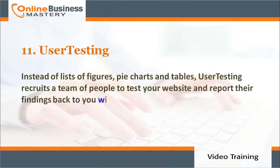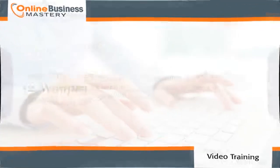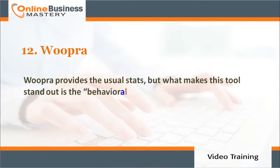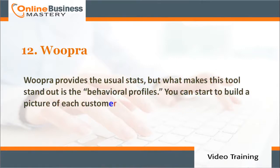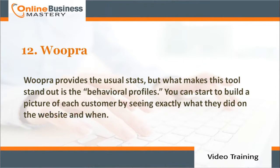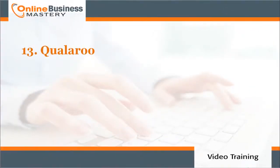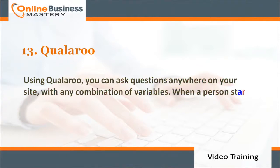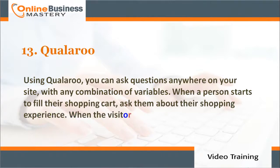Number eleven: UserTesting. Instead of lists of figures, pie charts, and tables, UserTesting recruits a team of people to test your website and report their findings back to you within an hour. Number twelve: Woopra. Woopra provides the usual stats, but what makes this tool stand out is the behavioral profiles — you can start to build a picture of each customer by seeing exactly what they did on the website and when.